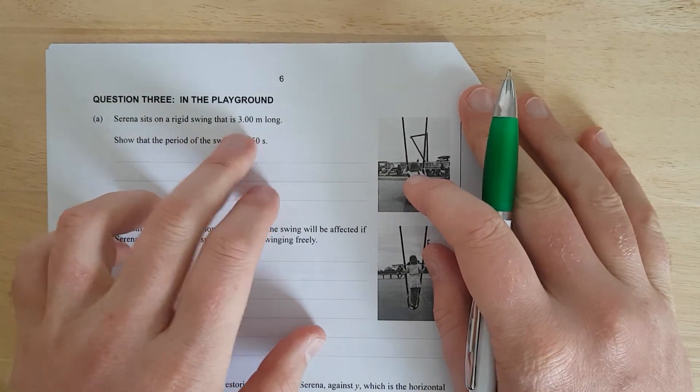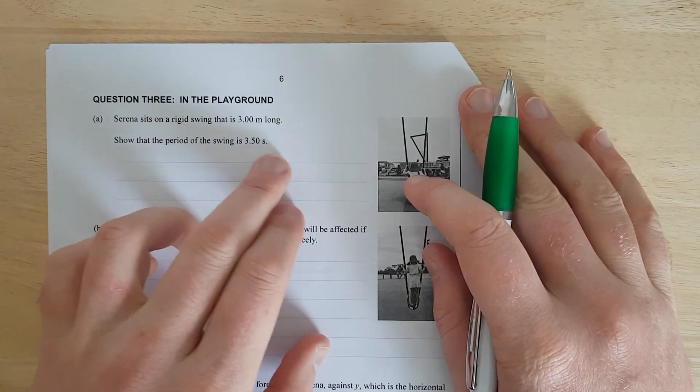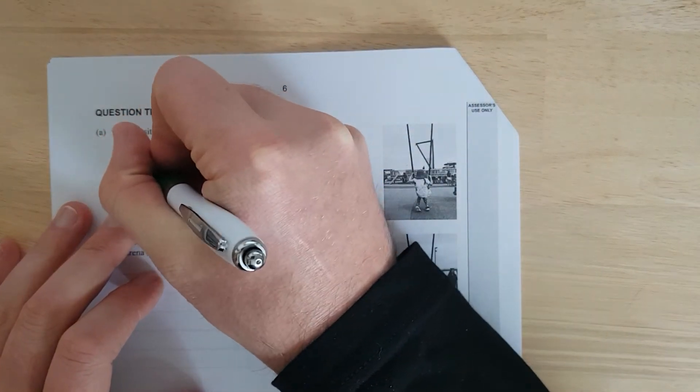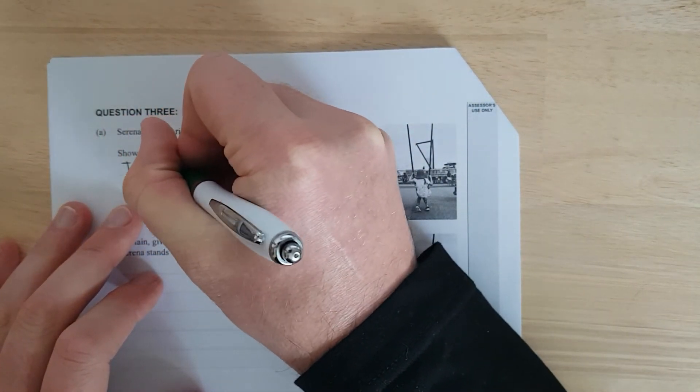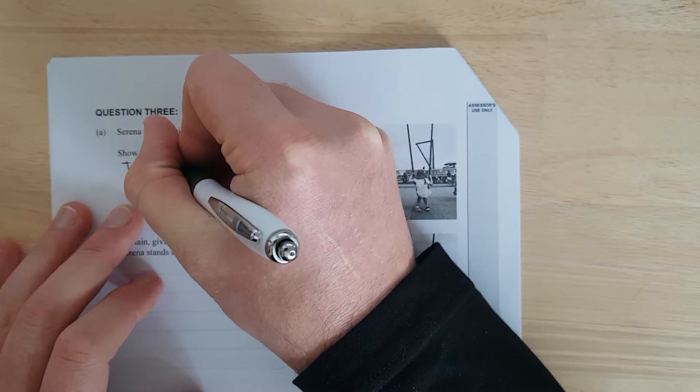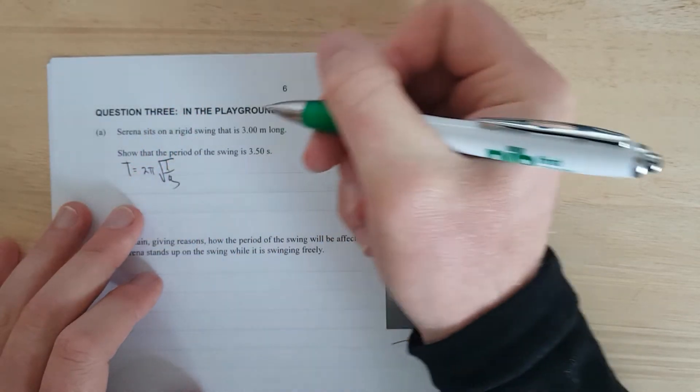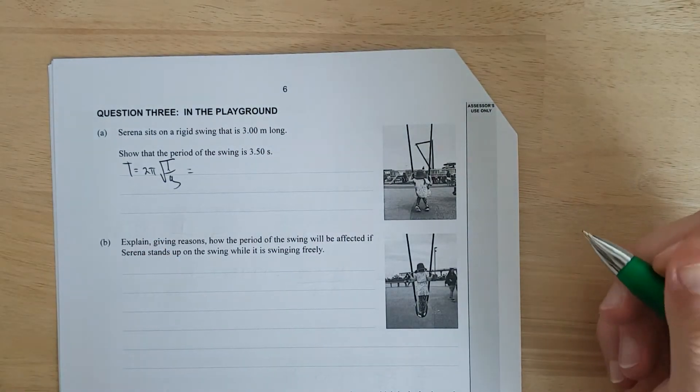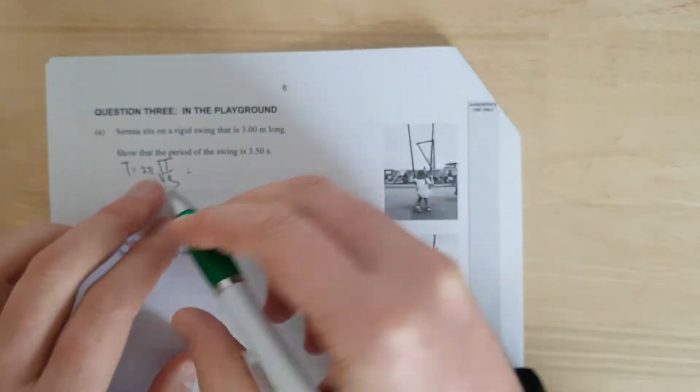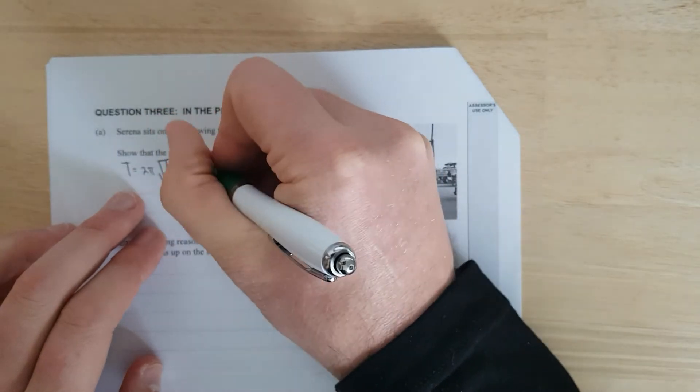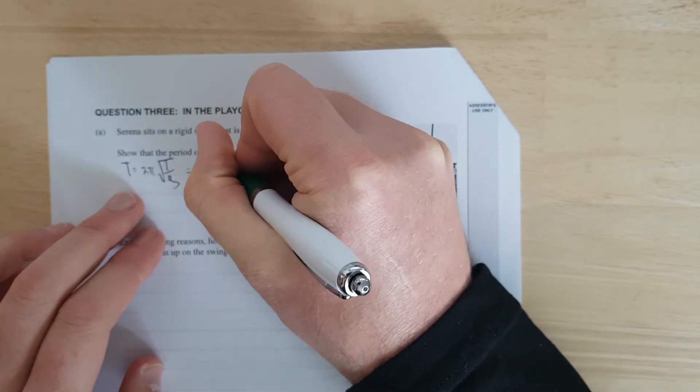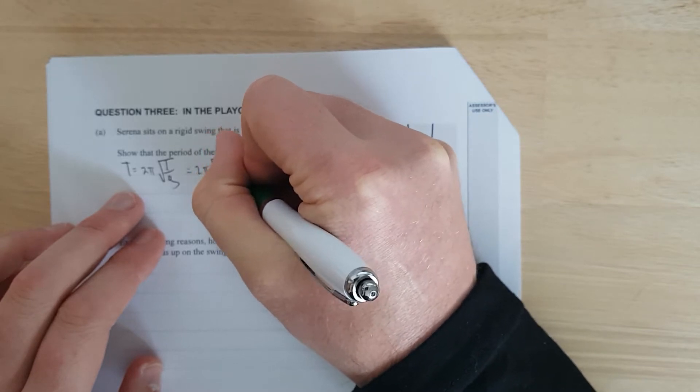Some lady, Serena, sits on a swing that is 3 metres long. Show you that the period of the swing is 3.5 seconds. This is T equals 2π square root L over g. That's it, I was plugging chug. Oh, this is a show question. Must have the formula first.